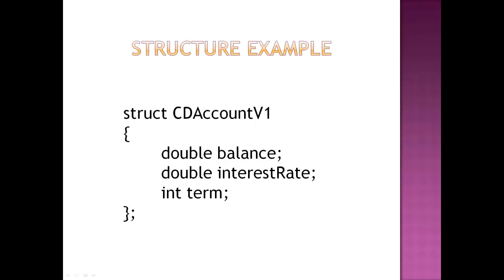So what's a structure look like? Here's a basic structure. We use 'struct' to say this is going to be a structure. We're going to call this structure CDAccountV1, and in that structure we're going to have three variables — two of type double and one of type integer — balance, interest rate, and term. A couple of things that are different with structures: we end it with a semicolon at the last curly brace, which is not something we've traditionally done up until this point. So make sure you're aware of that when you do your structures.